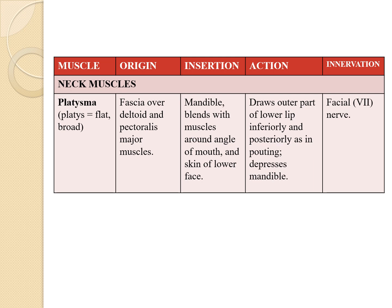Next, coming to neck muscles, the first one is the platysma. 'Platys' means flat or broad. Its origin is the fascia over the deltoid and pectoralis major muscles, and it inserts at the mandible and blends with the muscles around the angle of the mouth and skin of the lower face. Its major action is to draw the outer part of the lower lip inferiorly and posteriorly, as in pouting, and to depress the mandible. The muscle that depresses the mandible is the platysma. It is also innervated by the facial nerve.